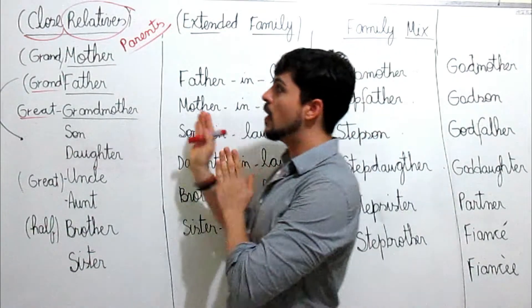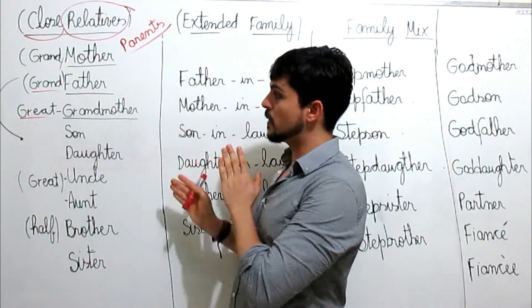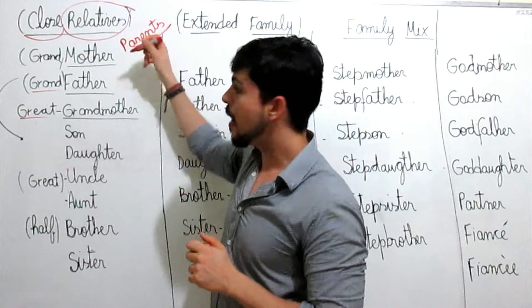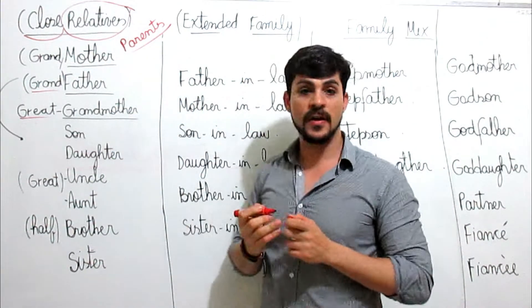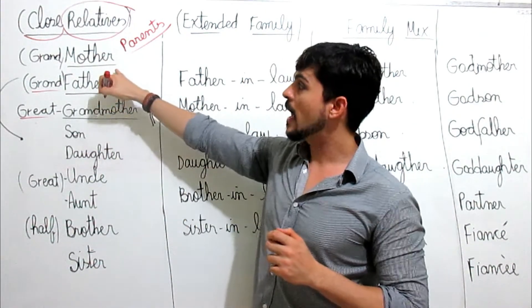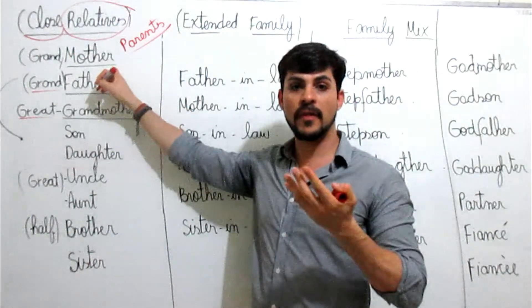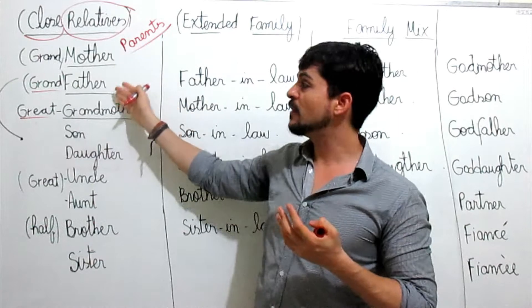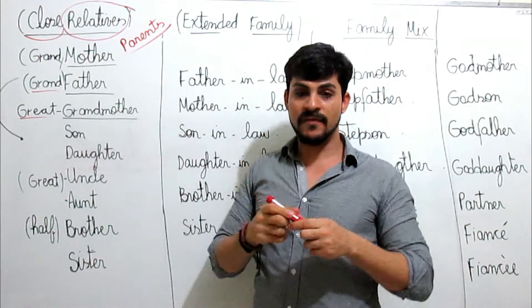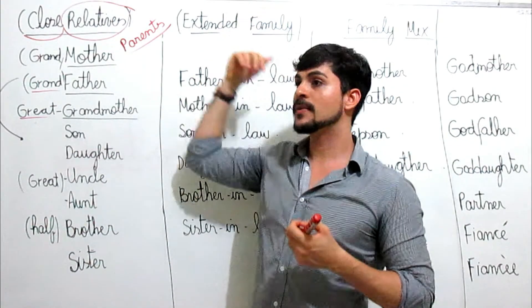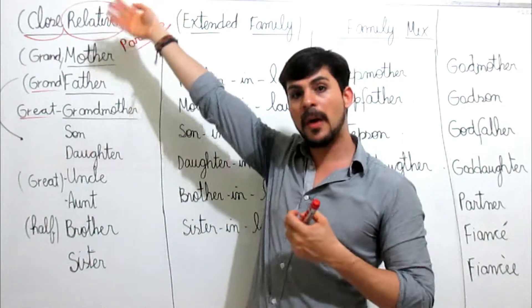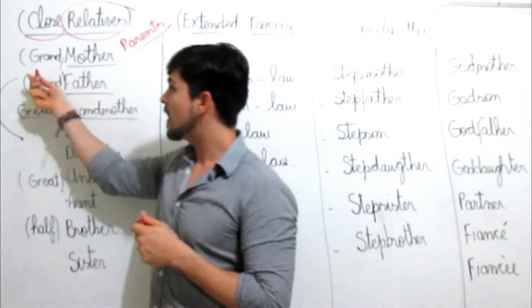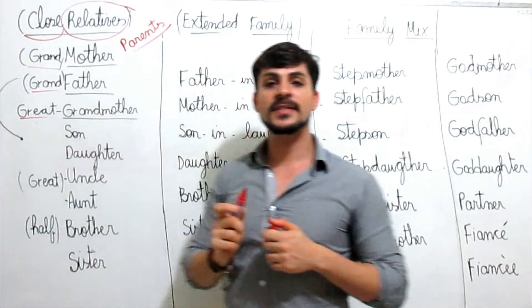So we're going to start here with the close relatives, the closest relatives. Starting with the most well-known, which are 'mother' and 'father.' These can also be pronounced as 'mother' and 'father' in the British pronunciation, and 'mother' and 'father.' If you want to go back a generation and refer to the parents of your mother and father, you add the particle 'grand.'